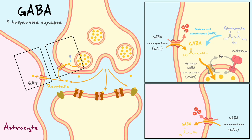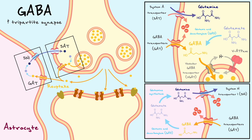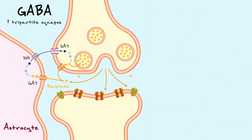GABA that returns directly to the presynaptic terminal can be recycled or broken down if not needed. In the astrocyte, GABA gets reconverted into glutamate by GAD — the same enzyme that did the opposite reaction in the presynaptic terminal. This glutamate is then converted into glutamine by glutamine synthetase. Glutamine leaves the astrocyte via the system N transporter and returns into the presynaptic cell through the system A transporter, both co-transporting sodium. Inside the presynaptic terminal, glutamine is reconverted into glutamate by glutaminase, completing the reuptake cycle.